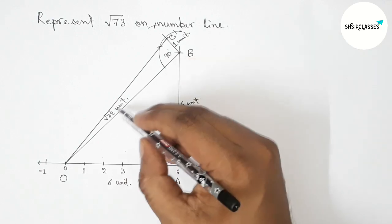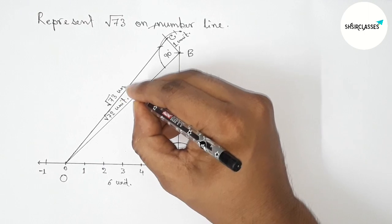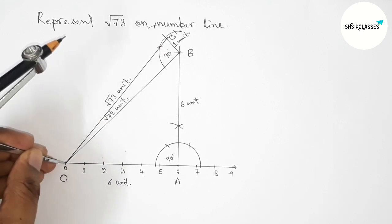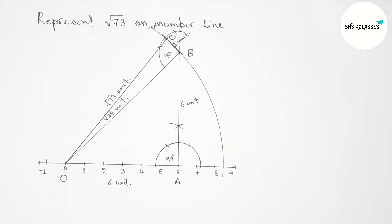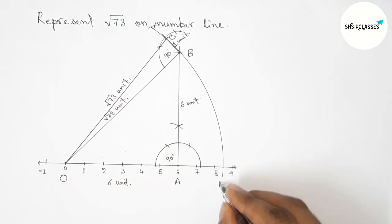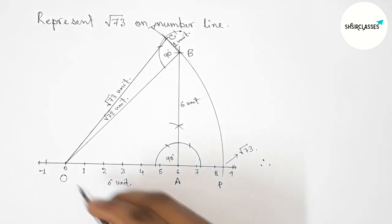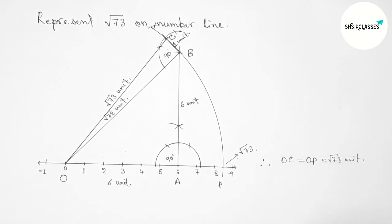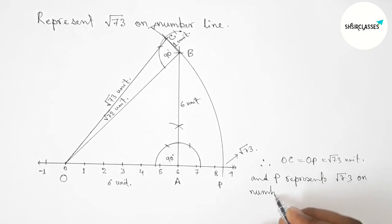Joining line OC. So triangle OBC is a right angle triangle, and OC is obviously root 73 unit length. Now with the help of compass, taking length OC and drawing an arc which meets the number line at point P. So OC and OP are both equal to root 73 units, and P represents root 73 on the number line.